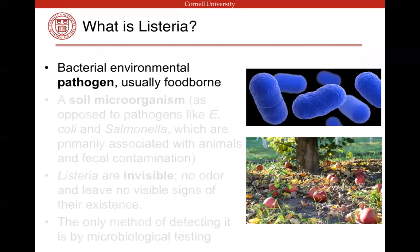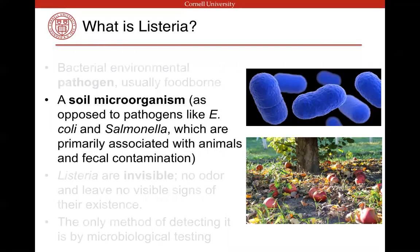Listeria is a bacterial environmental pathogen and it's usually foodborne. Usually people who get sick from Listeria and develop Listeriosis, it's from a food source. It's found in the soil and in the natural environment — you might find it on the sidewalk or in an ATM machine. That's very different from other pathogens like E. coli and Salmonella, which are primarily associated with animals and fecal contamination.